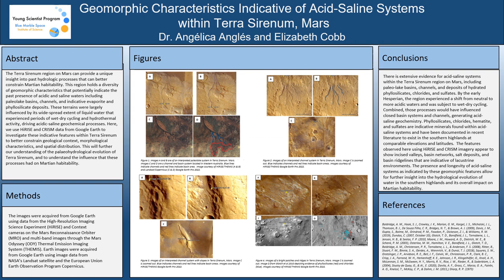The Terrasyrnum region can provide a unique insight into past hydraulic processes that can better constrain Martian hydrologic cycling. This region holds a diversity of geomorphic characteristics that potentially indicate the past presence of acidic and saline waters, including peri-lake basins, channels, and indicative evaporite and phyllosilicate deposits.